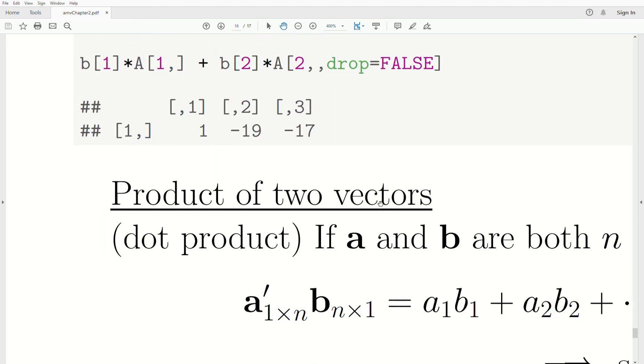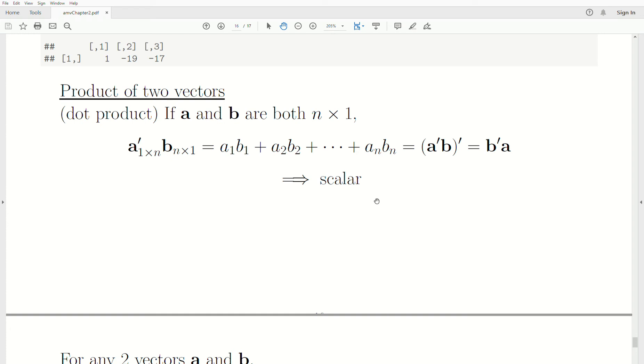Now, the last topic, the product of two vectors. So A times B have to be the same dimension. So they're both N by one column vectors. And this is what's called the dot product when you take A transpose times B.